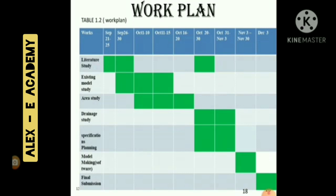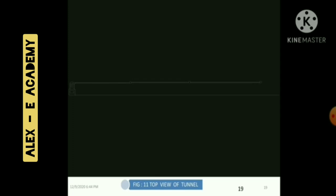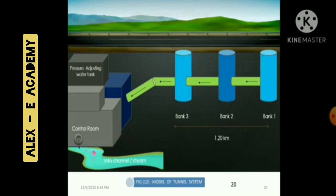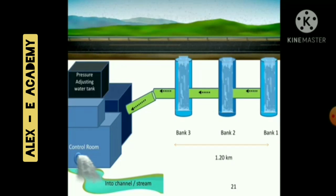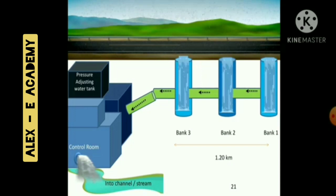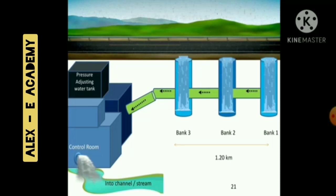This is our work plan. Figure 11 shows the top view of our tunnel — the main tunnel, pressure adjusting water tank, and other parts are visible, drawn with AutoCAD 3D. The tunnel system model includes three shafts, the main tunnel, the pressure adjusting water tank, and the control room. During flood season, water enters the shafts, is carried through the main tunnel (shown in light green), transferred to the pressure adjusting water tank where pressure is regulated, then to the control room, and finally discharged into a nearby channel or stream.